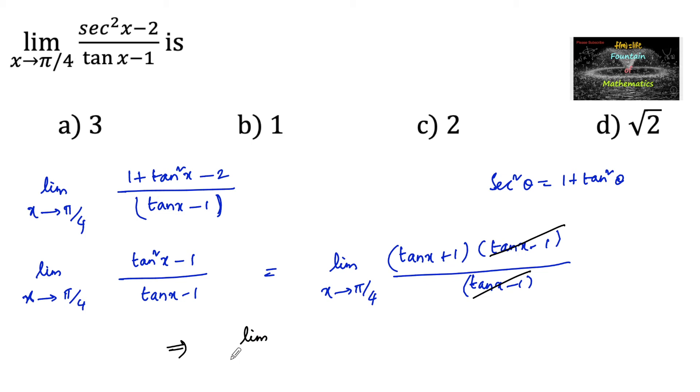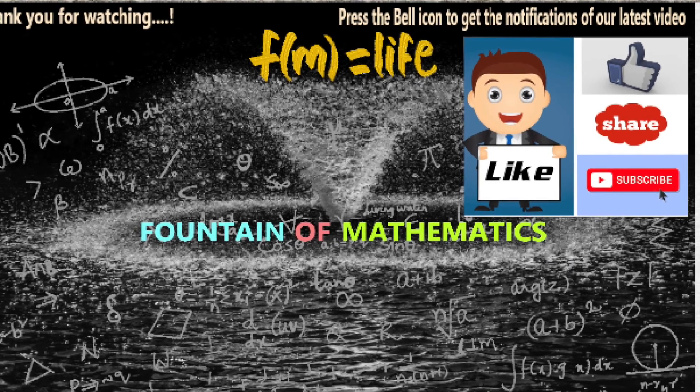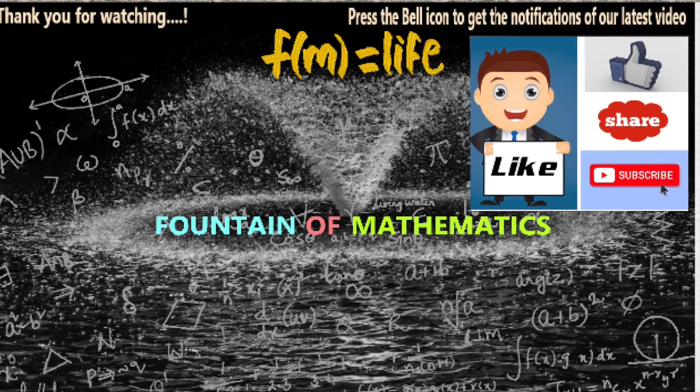So we have limit as x approaches π/4 of tan x plus 1, which equals tan π/4. Tan π/4 is tan 45 degrees, that is 1 plus 1, which equals 2. So we can go with option C.